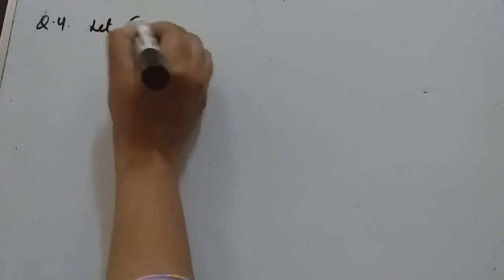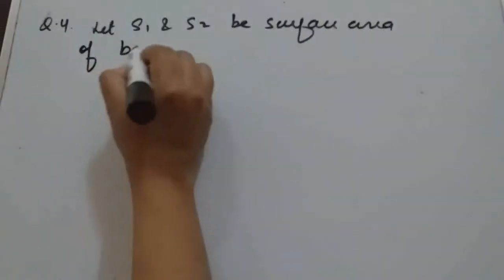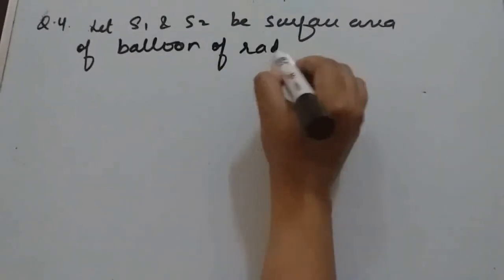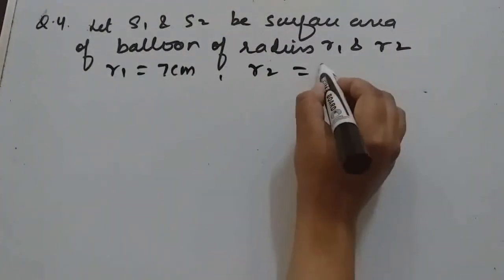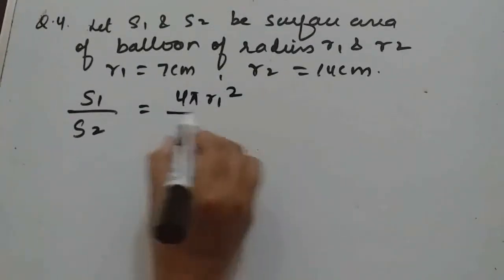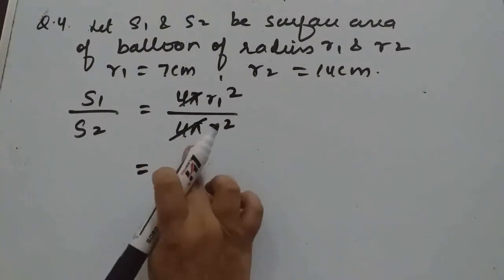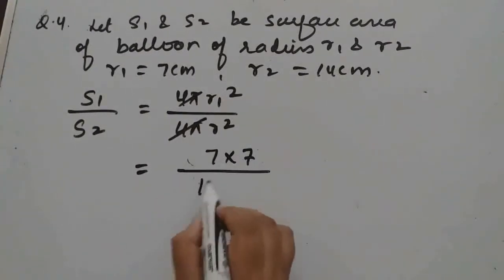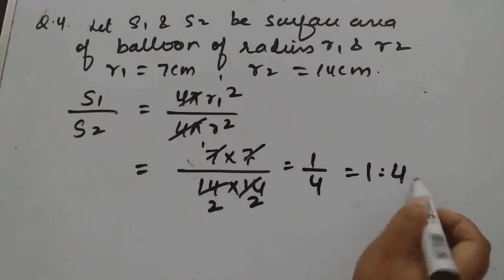Question 4: The radius of a spherical balloon increases from 7 to 14 cm. Find the ratio of surface areas. Let S1 and S2 be the surface areas for radii R1 = 7 cm and R2 = 14 cm. S1/S2 = (4πR1²)/(4πR2²). The 4π cancels, leaving R1²/R2² = (7×7)/(14×14) = 49/196 = 1/4. So the ratio is 1:4.